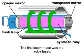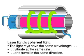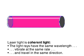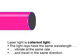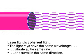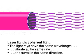Coiled around the bar is a flash lamp. Ordinary light is incoherent, with many wavelengths moving in different directions. A laser generates coherent light, which means its waves move in unison at the same wavelength — a light of singular intensity and power.